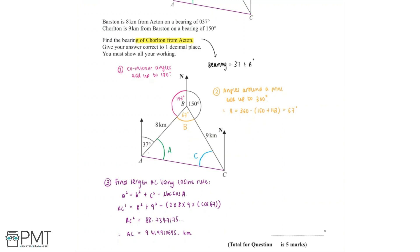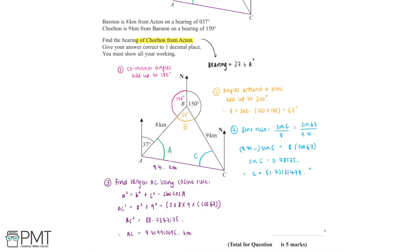We can also label AC on our diagram. Now we can find the blue angle labelled angle C using the sine rule. Using sine rule, sin C / 8 = sin 67 / AC, where AC is 9.41... kilometers. Cross-multiplying gives 9.41 × sin C = 8 × sin 67. Dividing both sides by 9.41 and using the inverse sine button, angle C is equal to 51.42131... degrees.